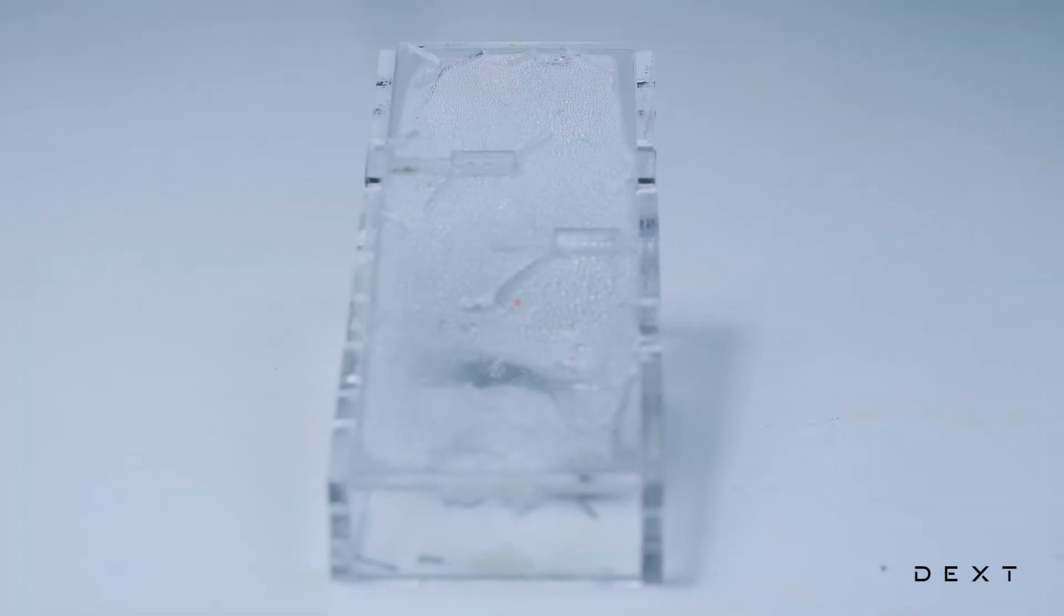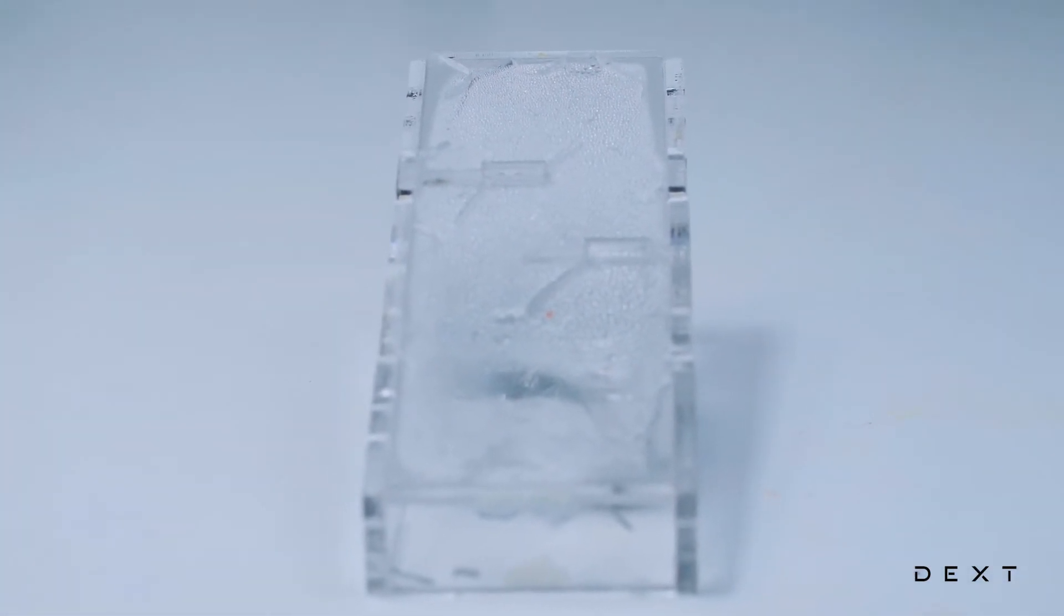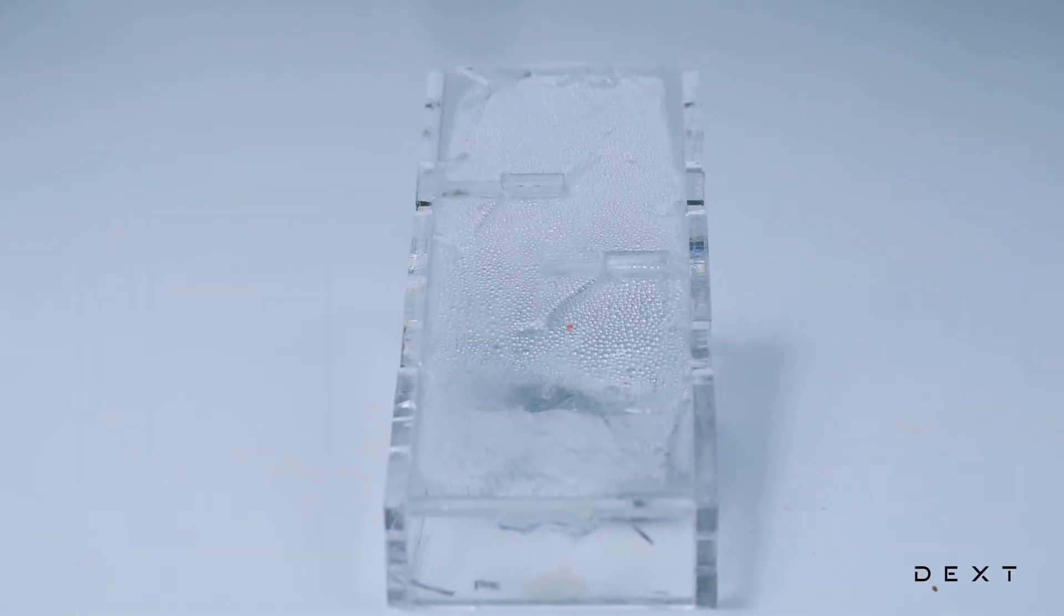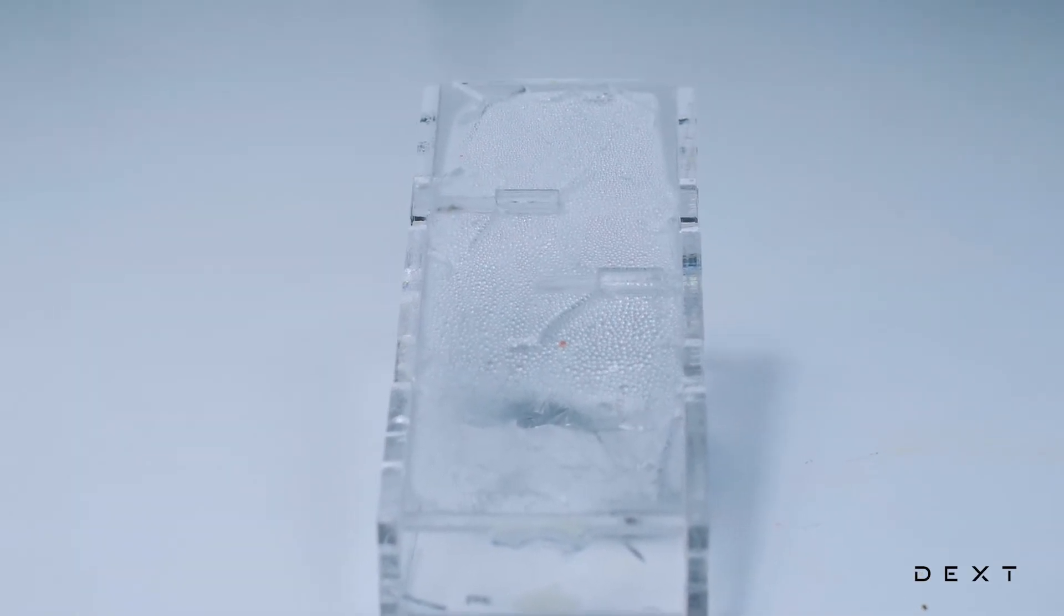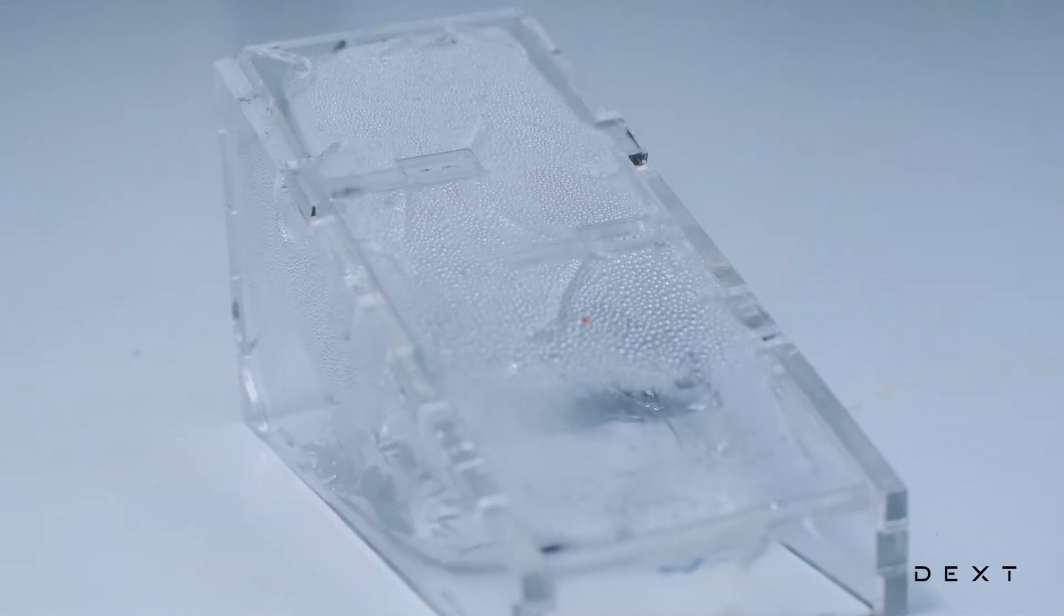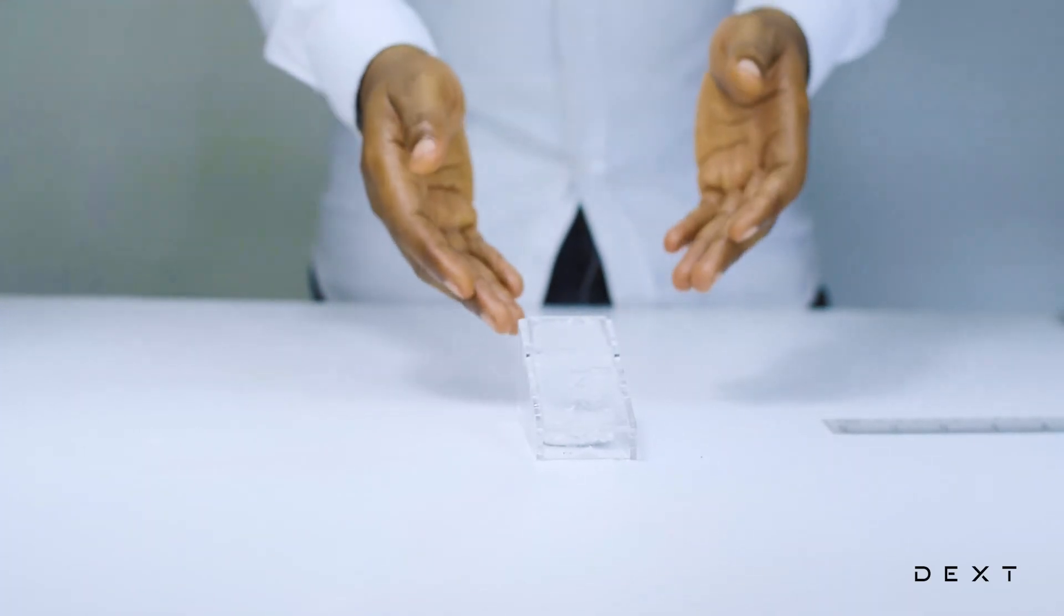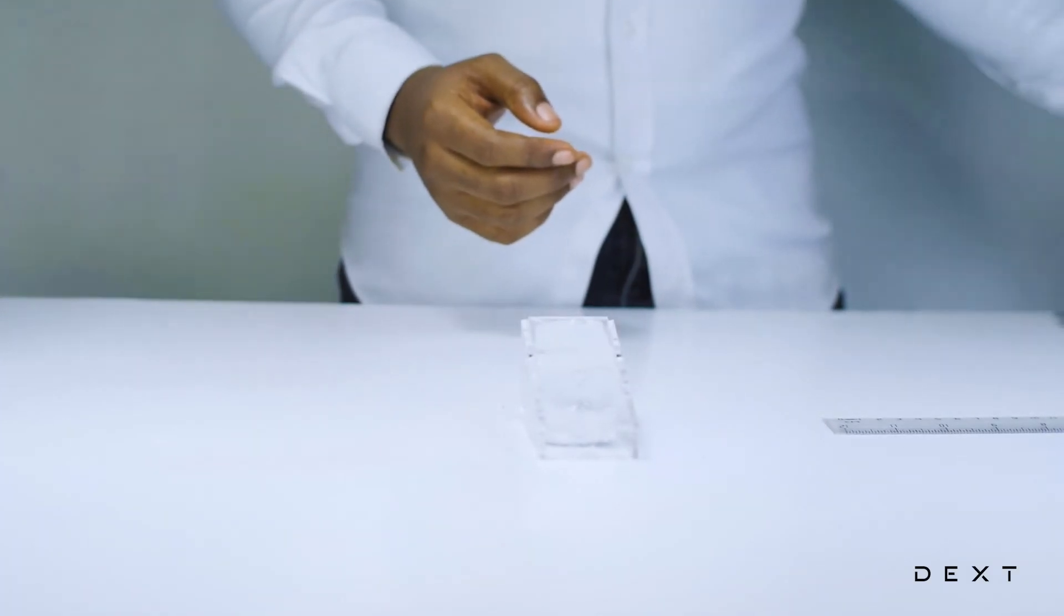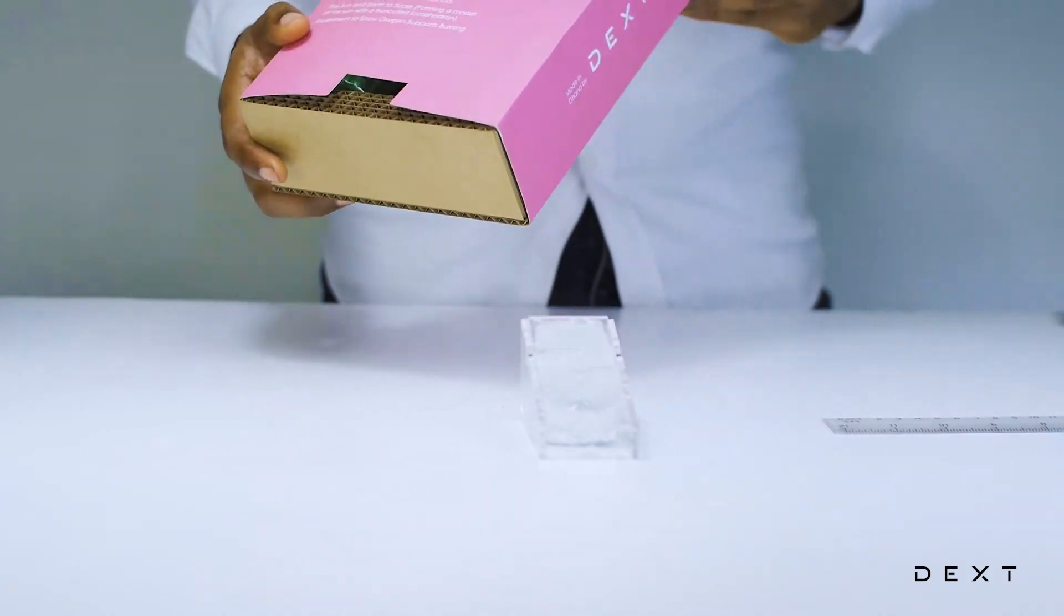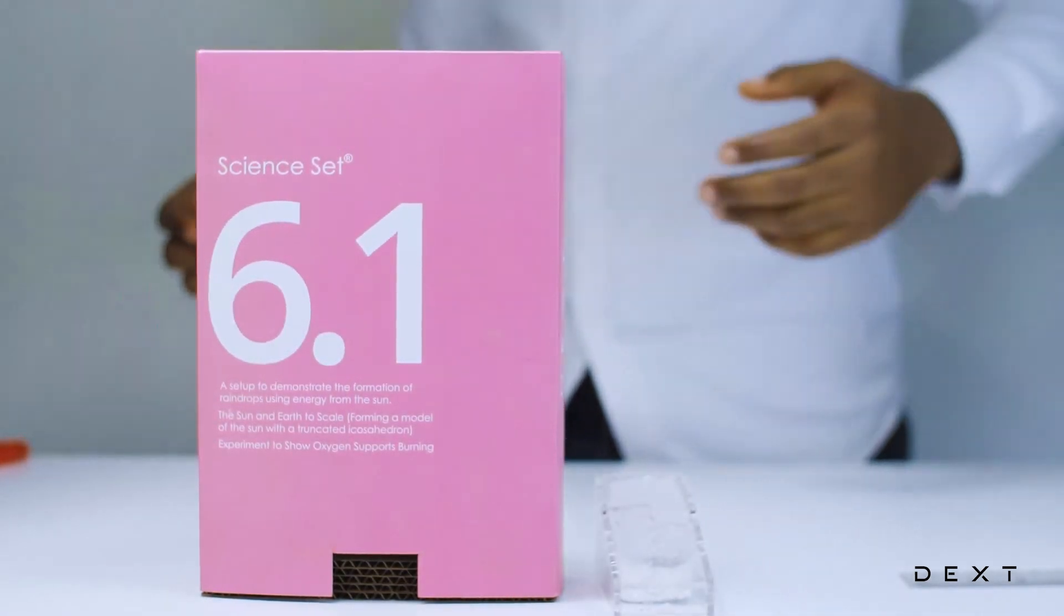As you can see, the water which is evaporating is forming some water droplets on the surface. This is another very simple but interesting activity. We perform this activity using the DEX SignSet 6.1. See you in the next video.